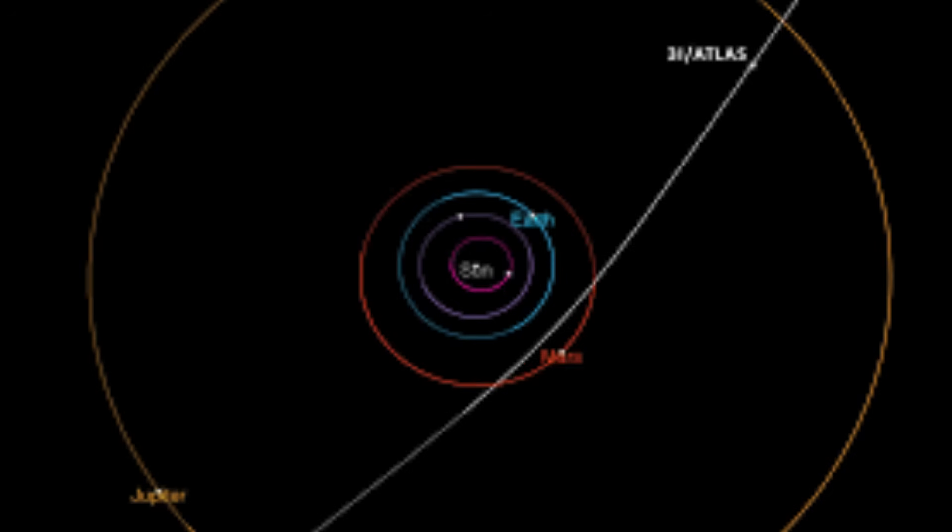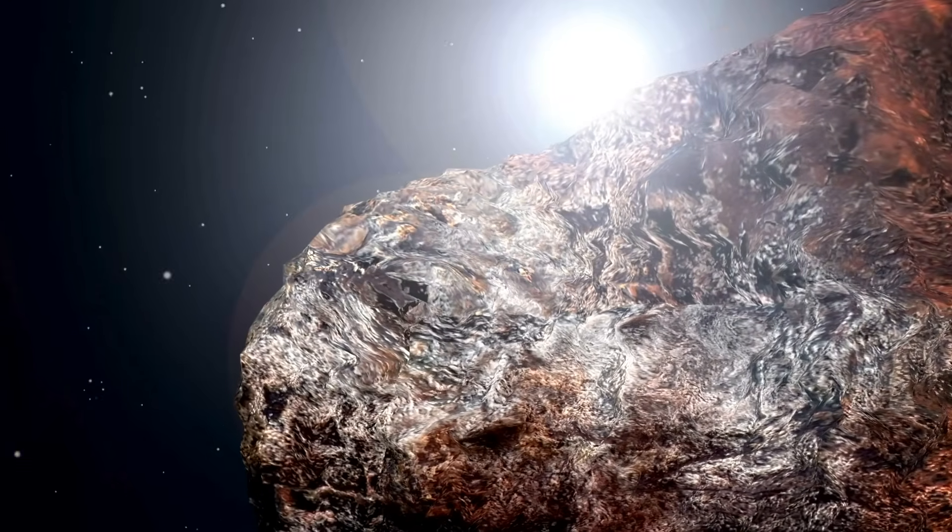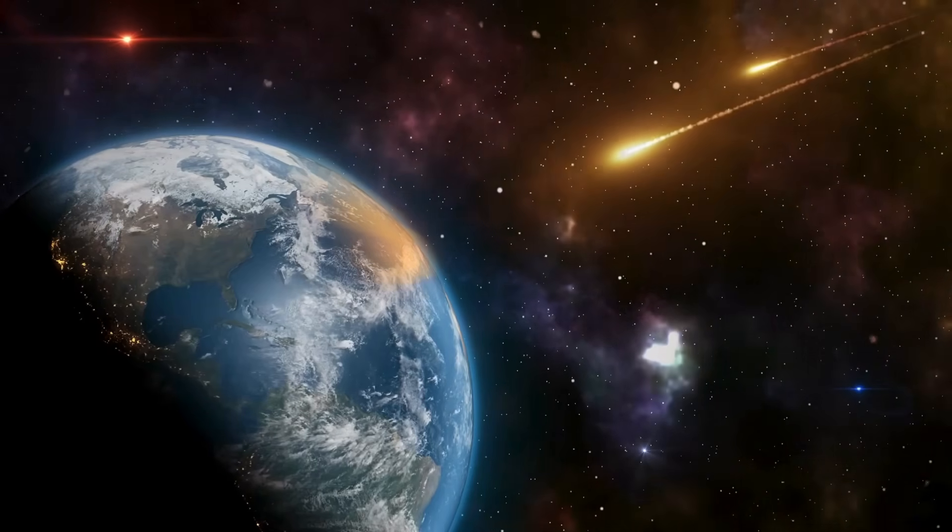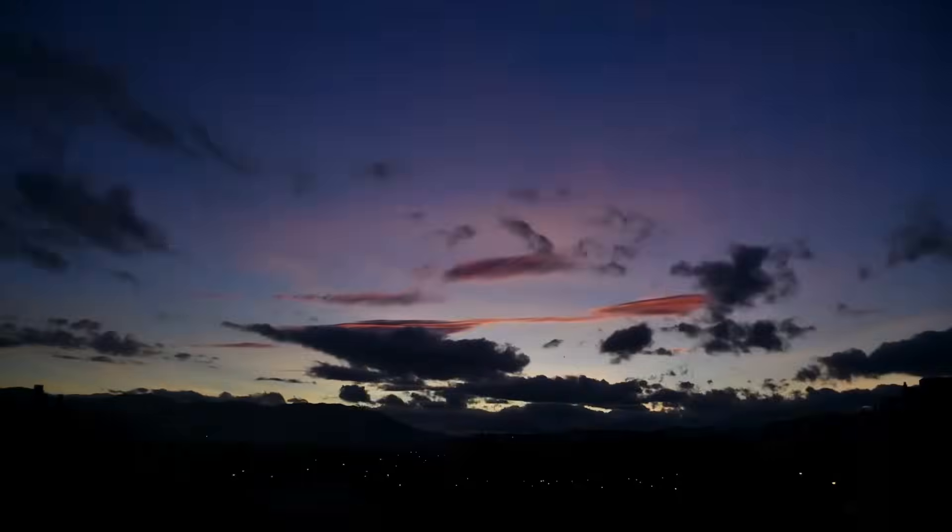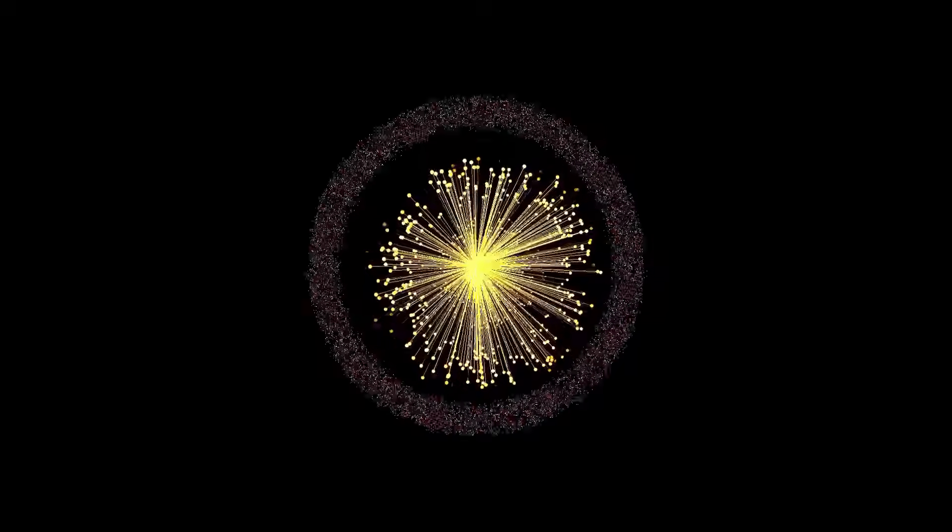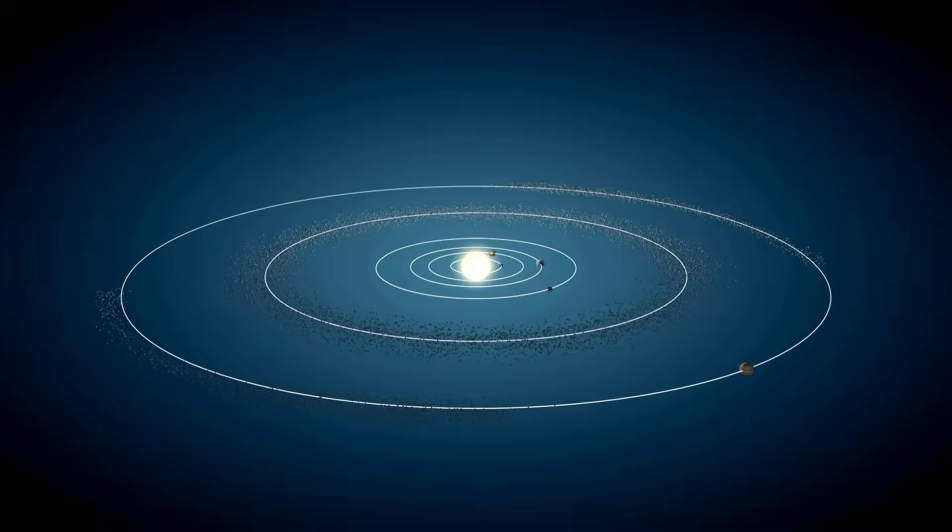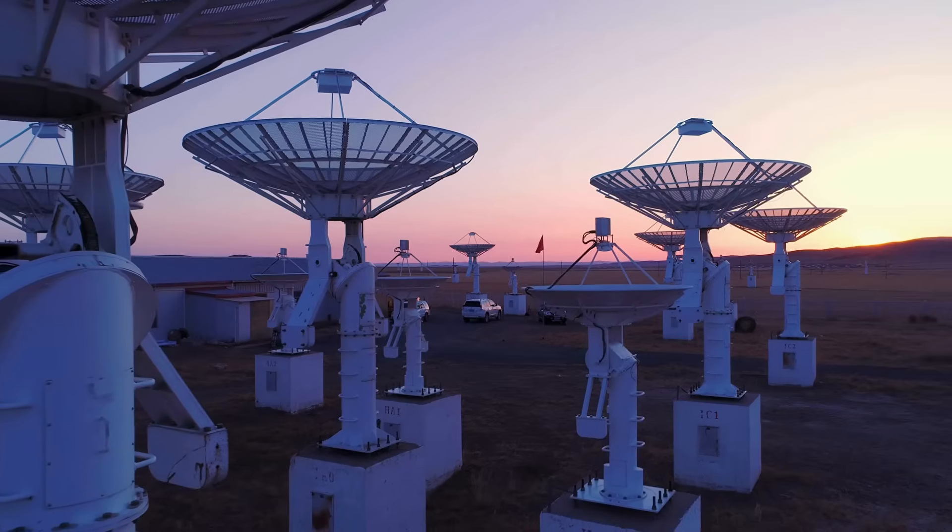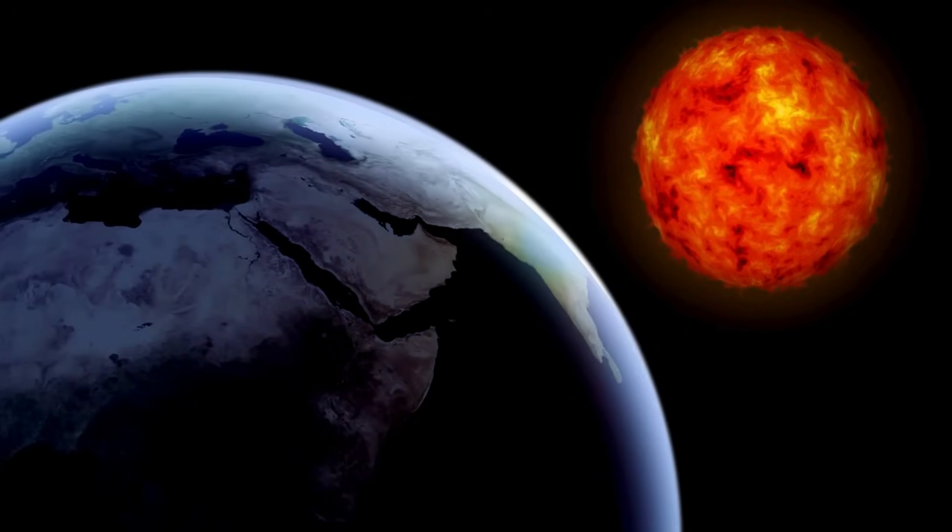Let's start with the basics. 3I Atlas was spotted by the Asteroid Terrestrial Impact Last Alert System, or ATLAS, a network of telescopes designed to catch objects that could pose a threat to Earth. Operating out of Rio Hurtado, Chile, ATLAS is a cosmic watchdog, scanning the skies for anything out of the ordinary. On that fateful July day, it flagged a faint point of light moving at 58 kilometers per second, about 670 million kilometers from the Sun, roughly near Jupiter's orbit. That's 4.5 astronomical units for those keeping score, one AU being the distance from Earth to the Sun.